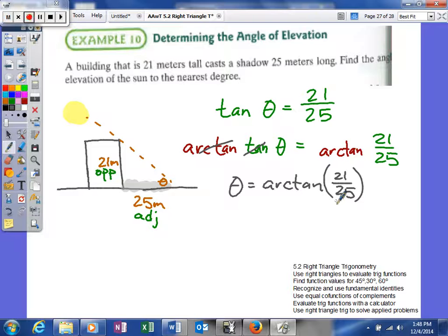To use arctangent, we use our calculator. Press second tangent. It looks like tangent to the negative one power, which I don't like because that notation usually means reciprocal. For example, 5 to the negative one equals one-fifth. But that's the notation, so that's what we'll type.